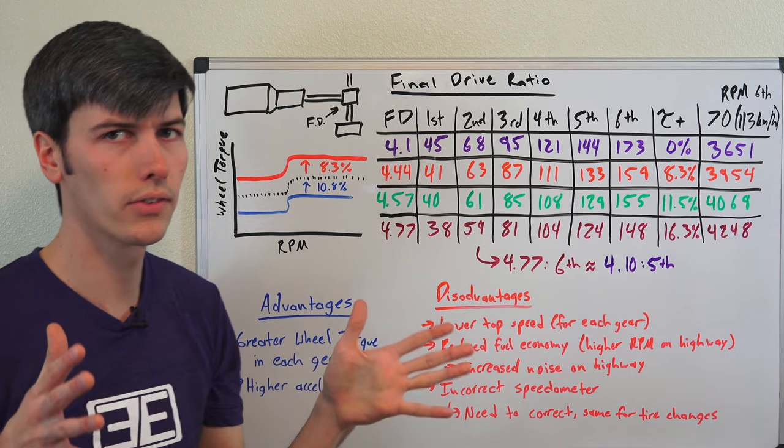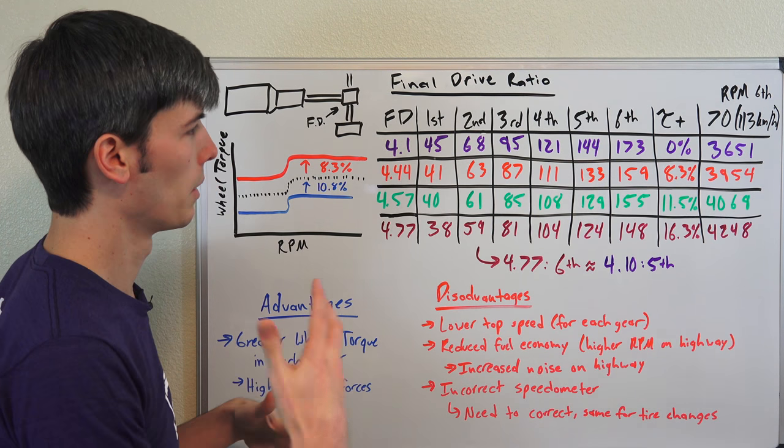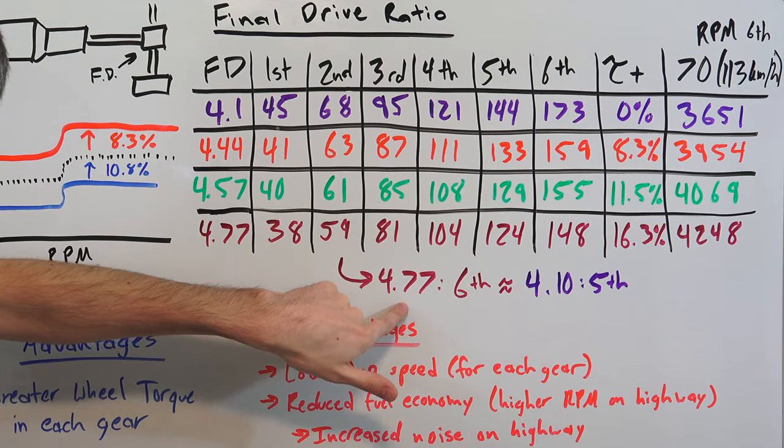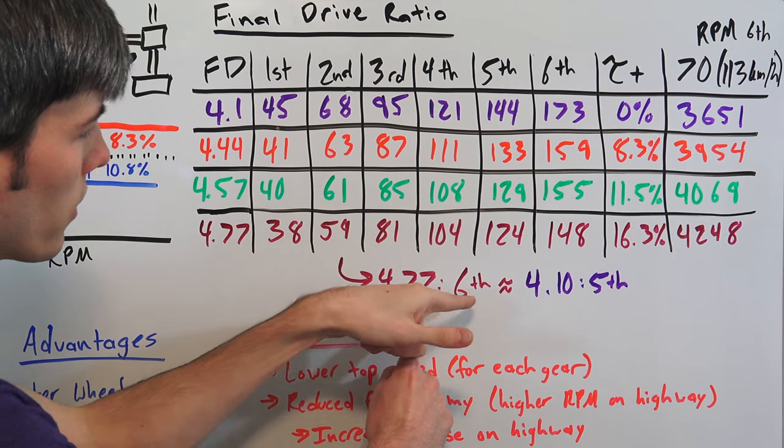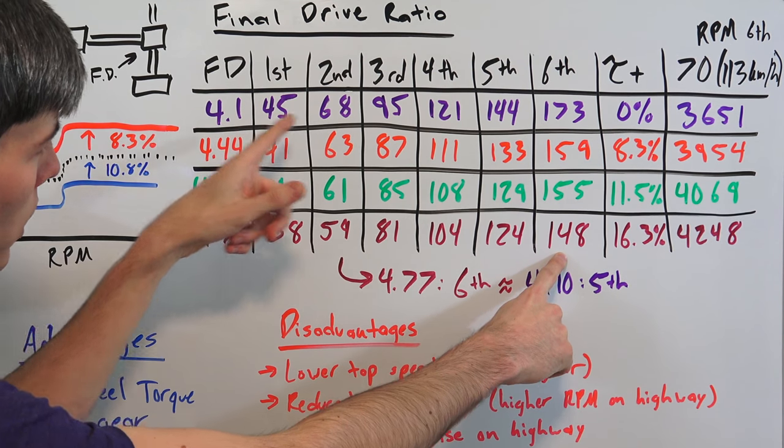So pros and cons of doing each thing. Now eventually there does come a point in which it's meaningless to keep getting more aggressive. Yeah, you can get more wheel torque and more wheel torque. But for example, what we look at here, if we look at the 4.77 in sixth gear, its top speed is 148. If we look at the 4.1 in fifth gear, the top speed is 144.